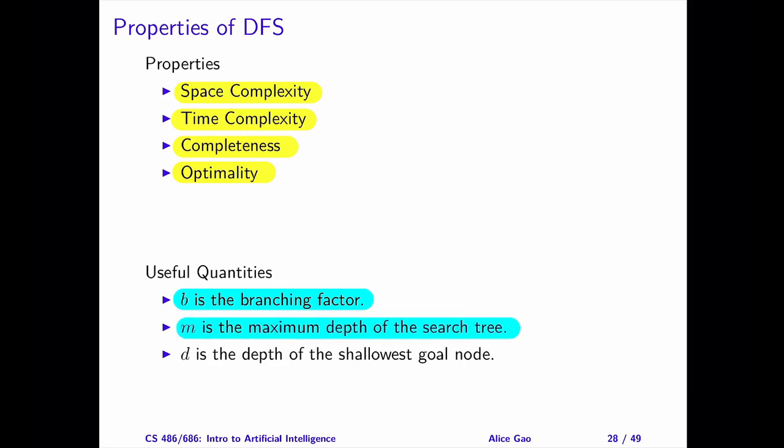M is the maximum depth of the search tree, and D is the depth of the shallowest goal node. What is the relationship between M and D? Let's look at the picture.